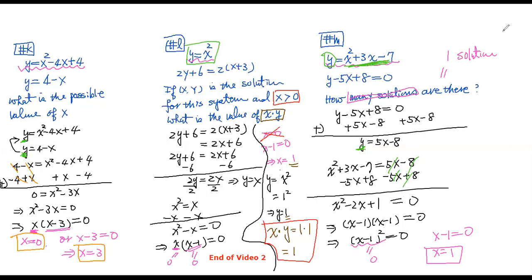Normally a quadratic gives two solutions, but here because we get (x minus 1) squared, we only have one solution. That's how you deal with a system of equations that includes a quadratic — use substitution or elimination, then factor to find the solutions.